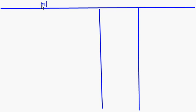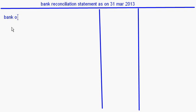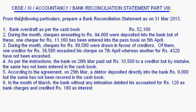Let's make the format for the bank reconciliation statement — the particulars column, amount details, and amount — as on 31st March 2013. The first item: bank overdraft as per cash book, the amount is given as rupees 52,100.